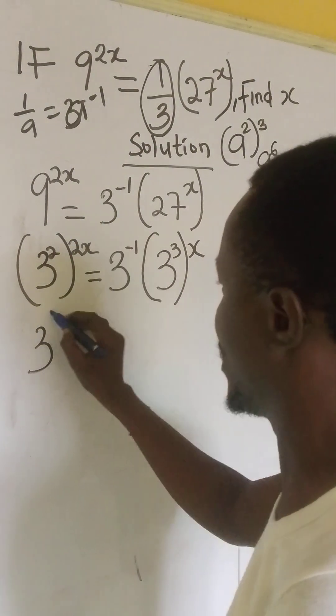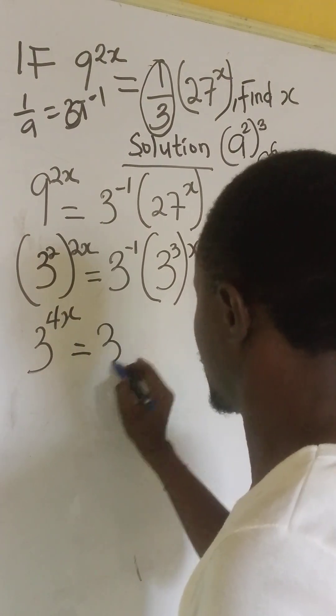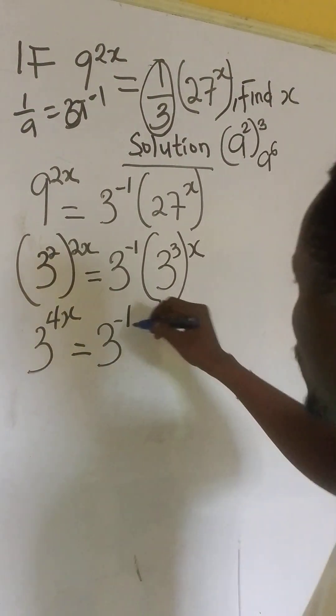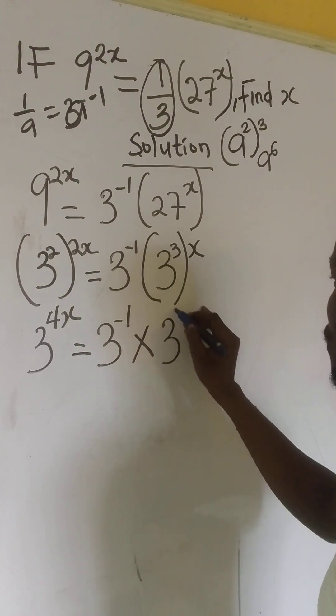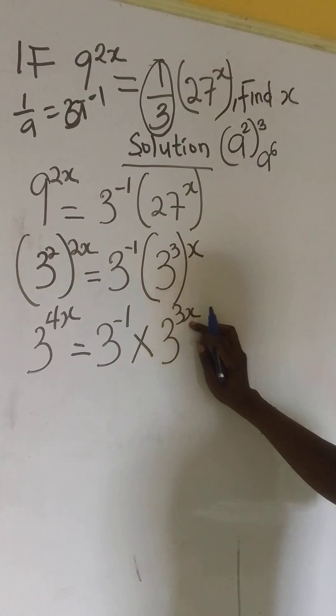2 times 2x will give us 4x equals to 3 to the power of minus 1. Then, we apply that law here also. That's 3 raise to power 3x. 3 times x will give us 3x.